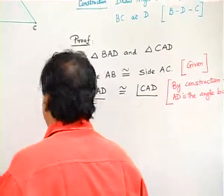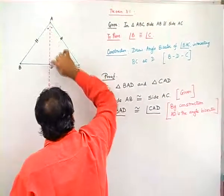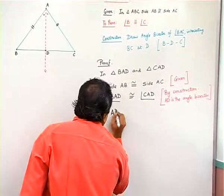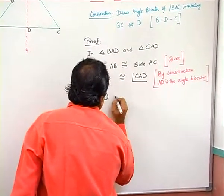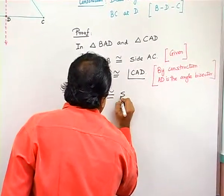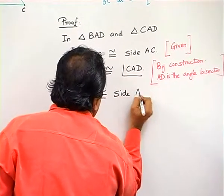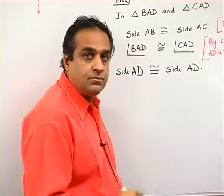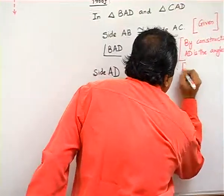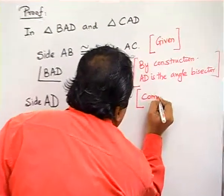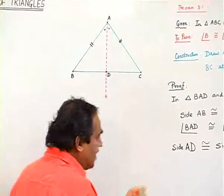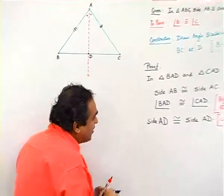And third, if you see this AD is congruent to itself. Side AD is congruent to side AD. Is this clear? Now, I will write the reason: common side. This is the common side for both the triangles. Now, my dear friends, can you see, S-A-S.